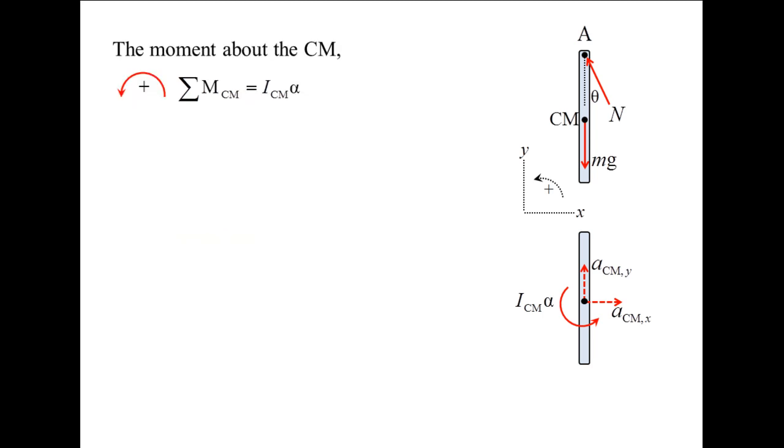For the moment equation, the moment of inertia about the center of mass, ICM, is the mass times the length squared divided by 12. Next, we determine the moment about the center of mass produced by the external forces. The normal force produces a positive moment and has a moment arm of one-half L times sine theta. The weight produces no moment because its moment arm is zero. And now we have equation number 3.